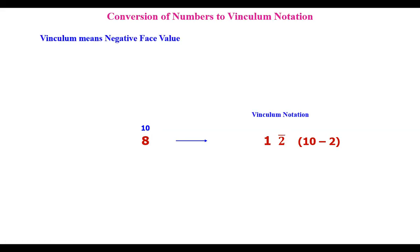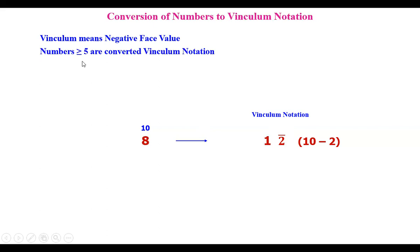Here we are going to use vinculum, which means negative face value. We never write minus 8 or minus 6; instead we write bar 2. Bar 2 is a negative value — that's why this system is called vinculum. Numbers equal to or greater than five are converted to this vinculum notation.